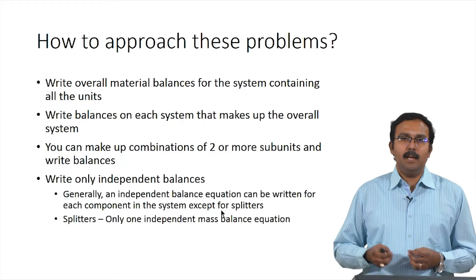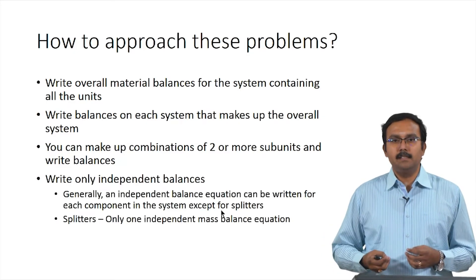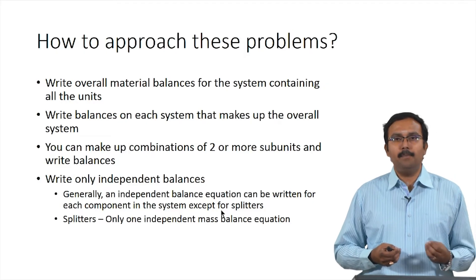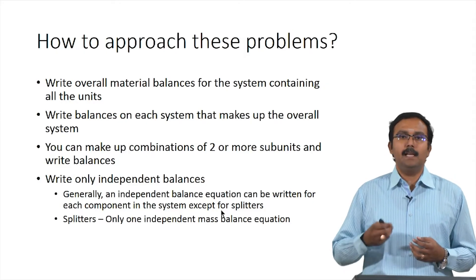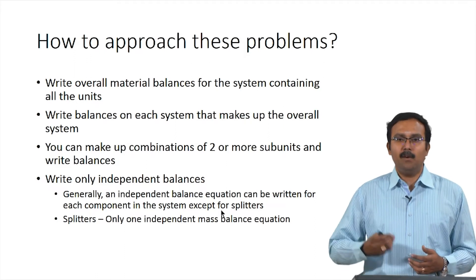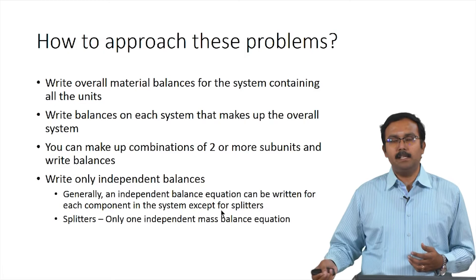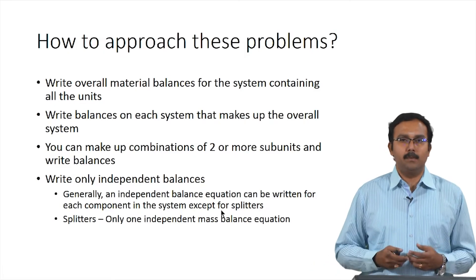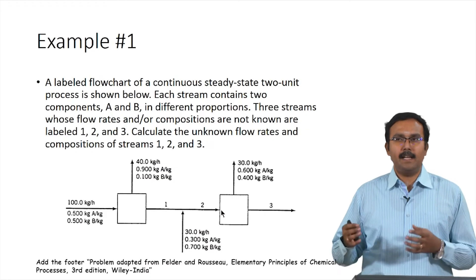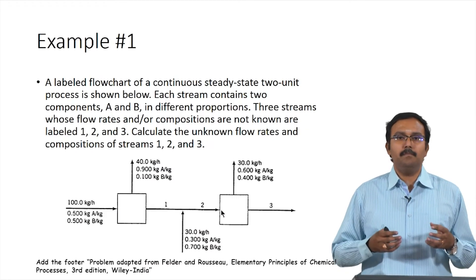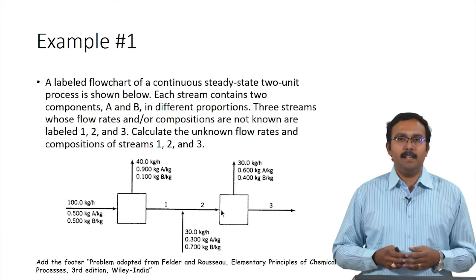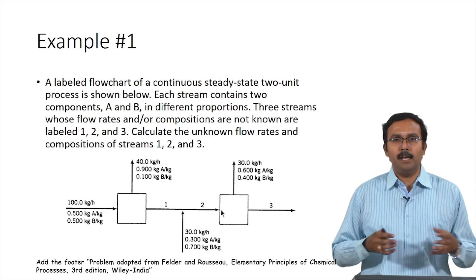We need to be careful to write only independent balances. Generally, one independent balance can be written per component for most systems, except for splitters, which have only one independent balance — the total balance equation. We will now look at three example problems using different approaches to solve multi-unit processes.